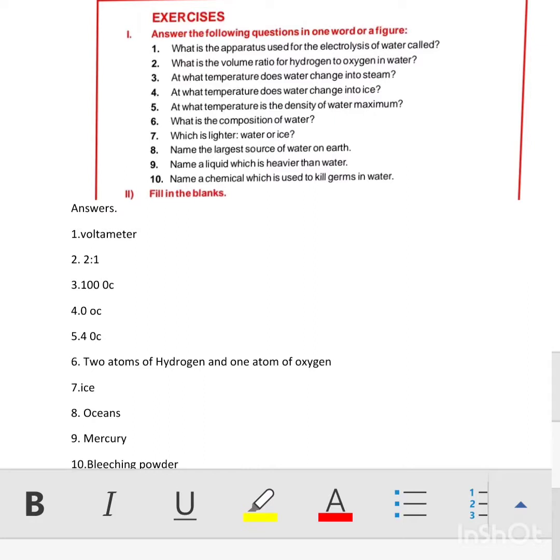Question 2: What is the volume ratio for hydrogen to oxygen in water? Water has the chemical formula H2O. Hydrogen has two atoms and oxygen is one atom. The answer is 2:1.